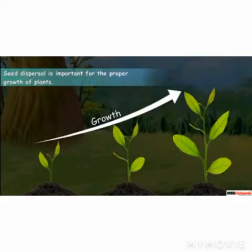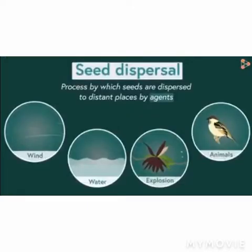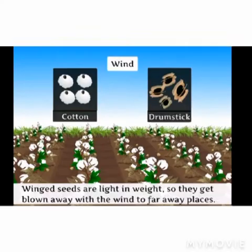Now, how will seeds be dispersed? Of course they do not have limbs, so they are dispersed to distant places by several agents or factors like wind, water, explosion and by animals. Let's read about them one by one.